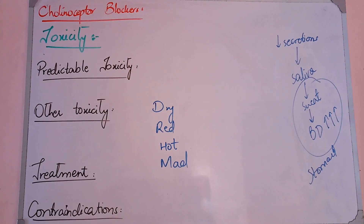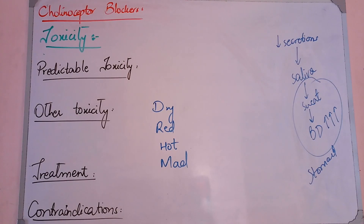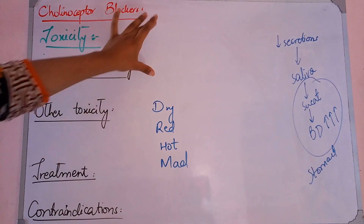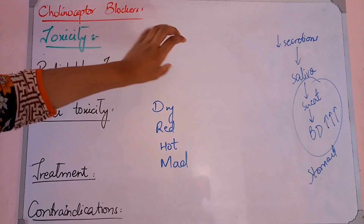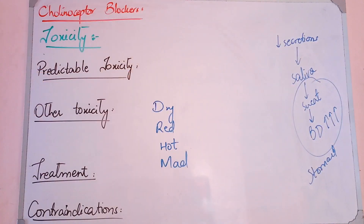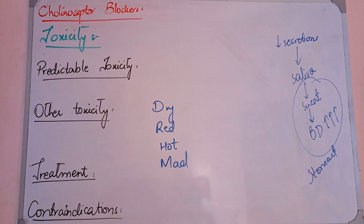If you know what the clinical features are, you know what the eye effects are. The eye effects include dryness, cycloplegia, mydriasis — pupil dilation — and spasm of accommodation. If the pupils dilate, you can't focus on close things, resulting in blurring of vision. So in toxic effect, there is blurring of vision.